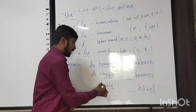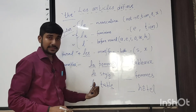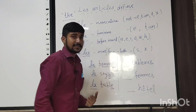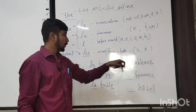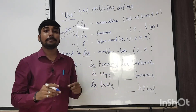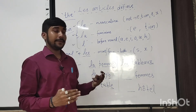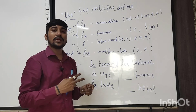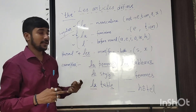Here again we see 'e' at the end, so it will be 'la' — 'la table,' the table. The next word ends in 'x,' and x indicates plural form. So 'tableaux' is a plural word — 'tableaux' means paintings or boards. Because it is plural, we use 'les tableaux.'